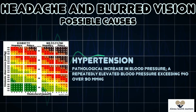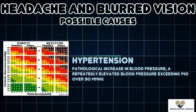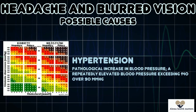Number two, we have hypertension, which is a pathological increase in blood pressure — a repeatedly elevated blood pressure exceeding 140 over 90 millimeters of mercury.